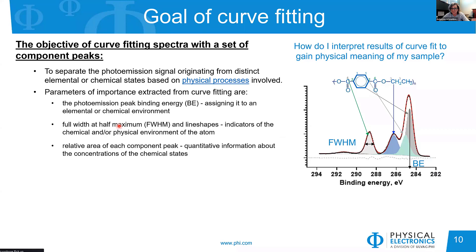The second piece of information we can extract is the full width at half maximum (FWHM). At half the total intensity of our peak, we measure the full width. This parameter is important as a fitting parameter and as an indicator of chemical environments. We also extract relative areas of each component peak because they provide the concentration of different chemical states.